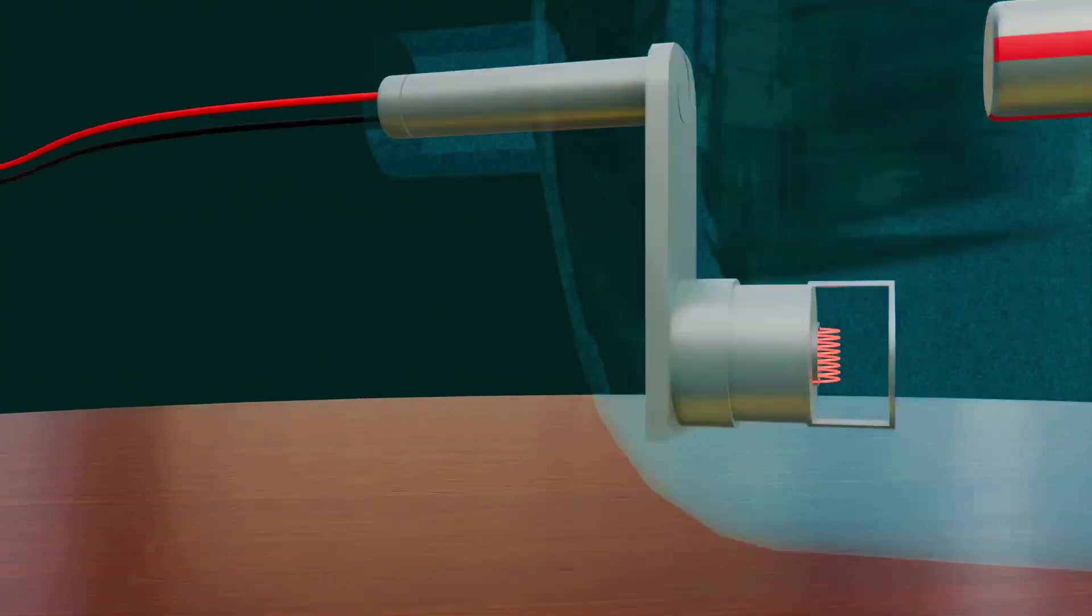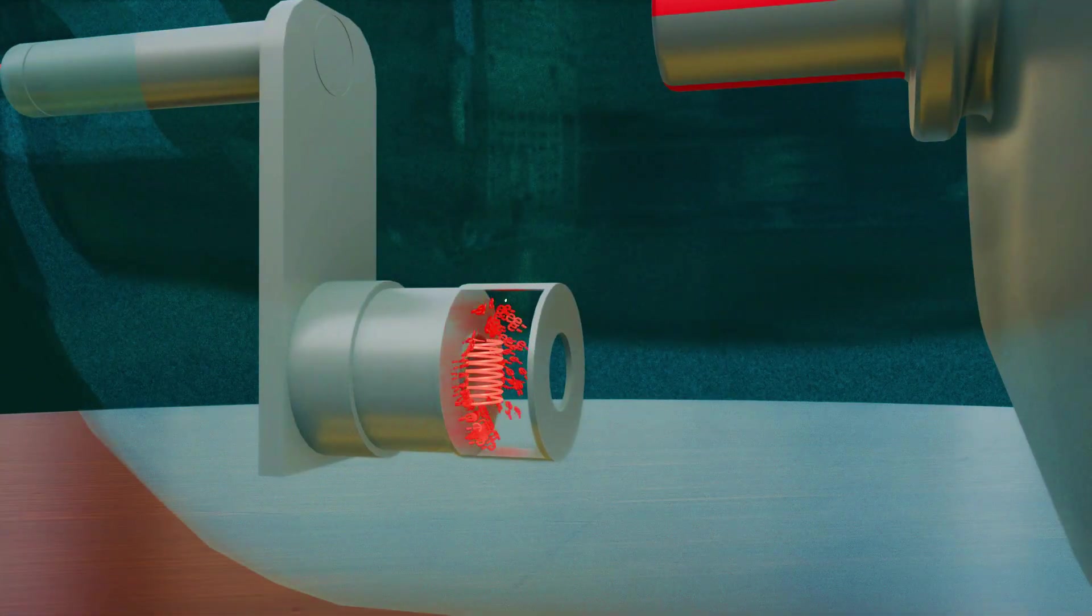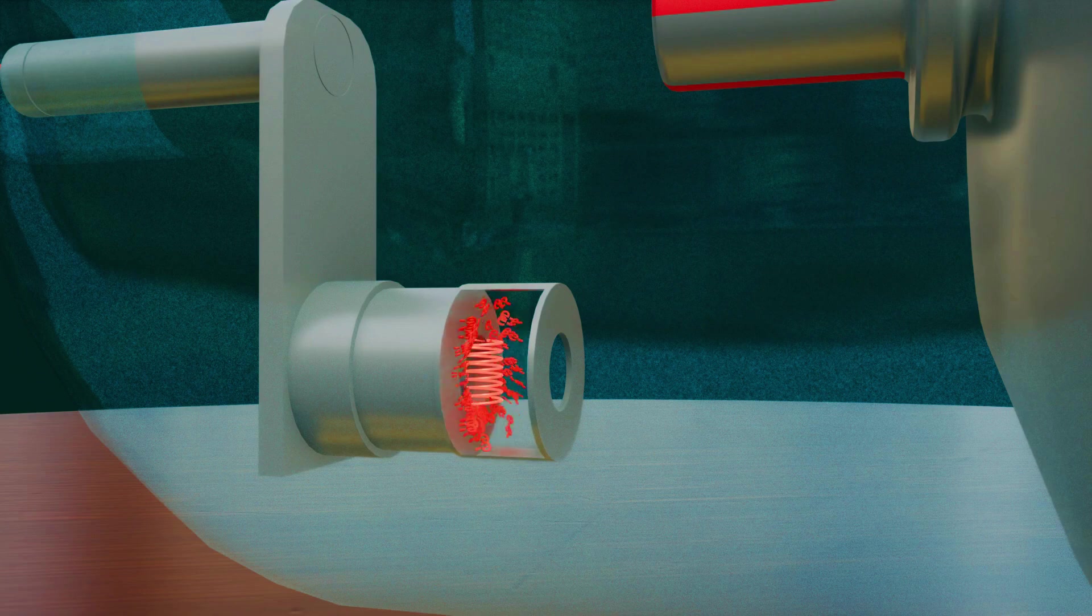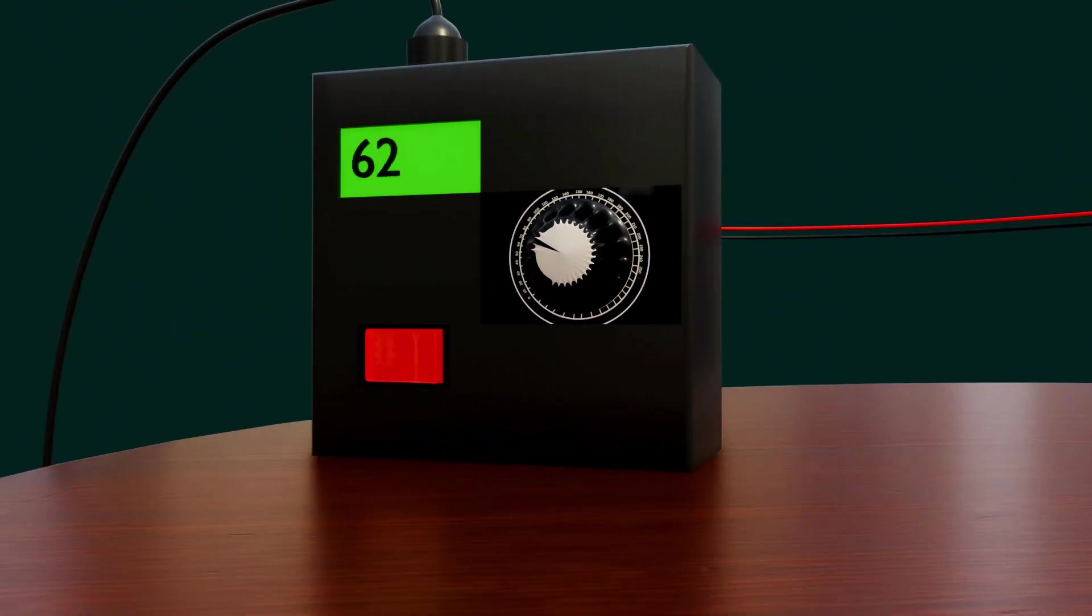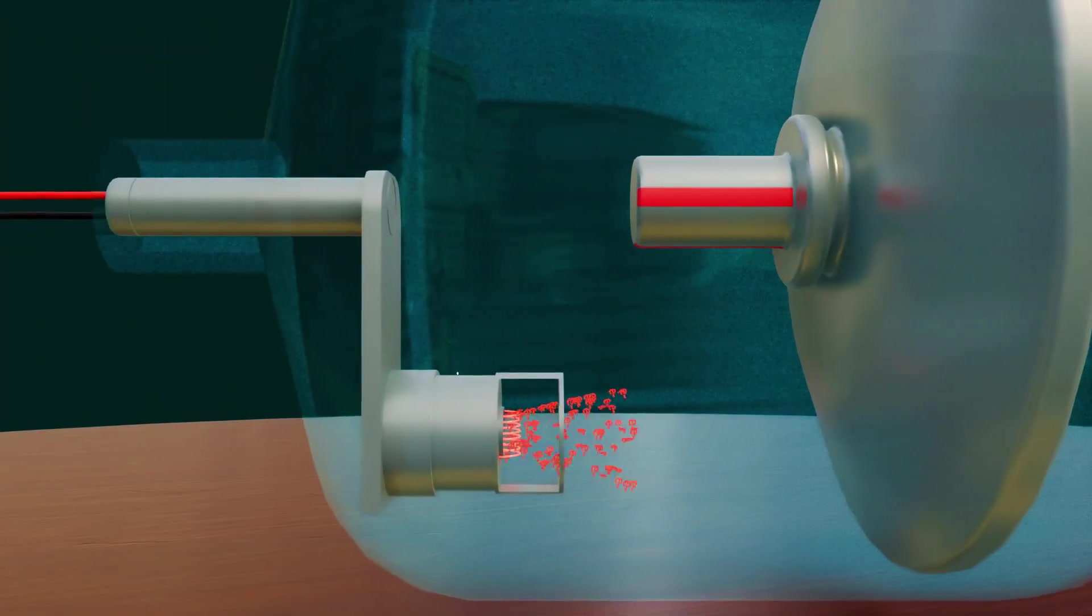This high voltage initiates thermionic emission in the filament, causing electrons to be released. These electrons are then forced to travel through the vacuum. When the voltage is further increased to 150 kV, the electrons accelerate to very high speeds.